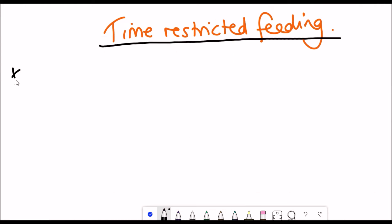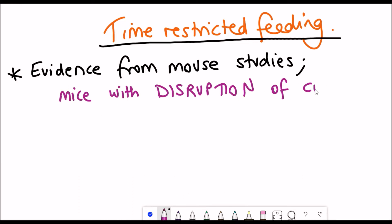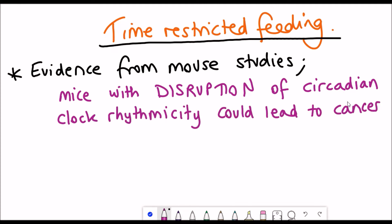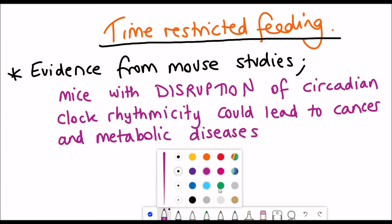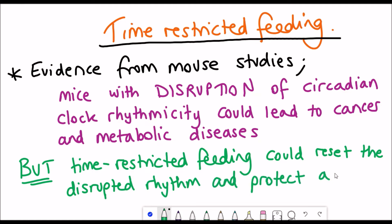The connection between intermittent fasting and circadian rhythms is the idea that maybe when we eat could have importance. Supporting this are studies conducted in mice that have shown that mice with disrupted circadian clock rhythmicity can result in increased risk of cancer and metabolic diseases. But the important and key thing for this study is that time-restricted feeding in mice could reset the disrupted rhythm and actually protect against these diseases.